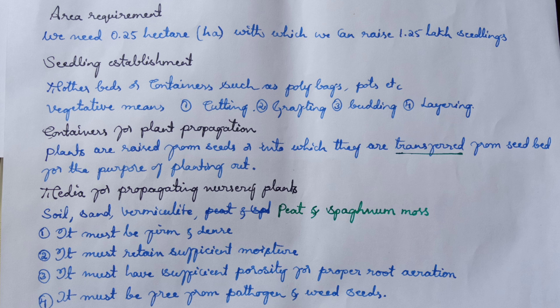In a nursery, seedlings are established in mother beds or containers such as poly bags, pots, etc. Seedlings can be established from seeds or through vegetative means including cutting, grafting, budding, and layering. In case of seedling establishment from seed, preliminary treatment is essential to improve germination. Reasons for delayed or failed germination include: tough and fibrous seed coat or hard shell, seeds containing higher lipids, presence of germination-inhibiting substances, immature embryo, and after-ripening process.